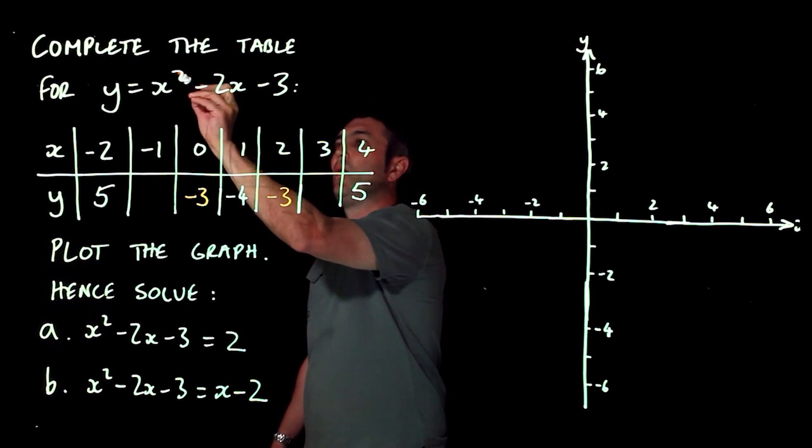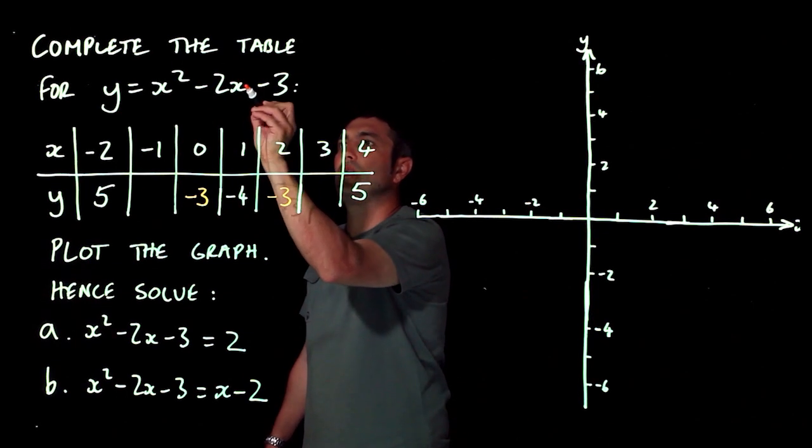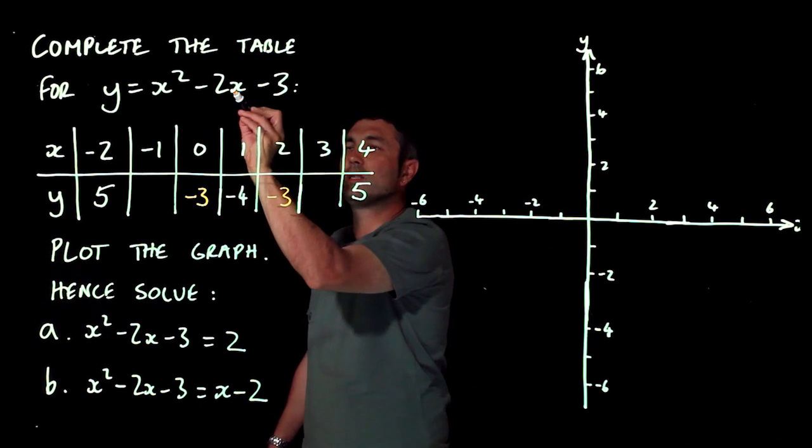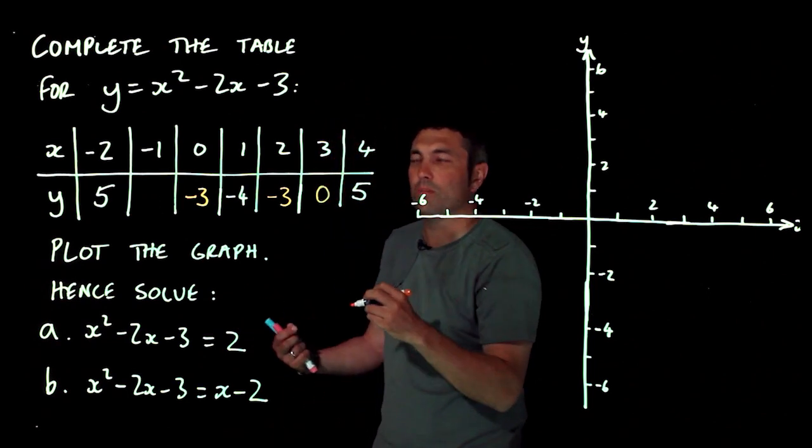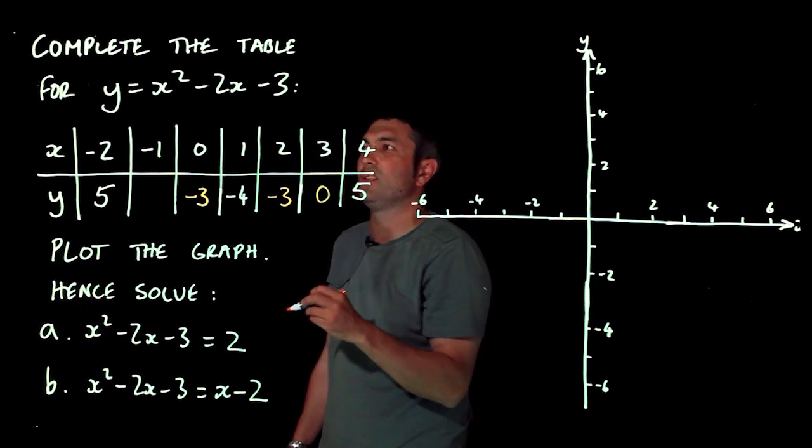So 3 squared is 9, take away 2 lots of 3. So 9 take away 6 is 3, take away 3 is 0. So I'm sort of expecting this to be 0, but I'm just going to check it just in case. I don't want to make any silly mistakes.